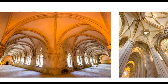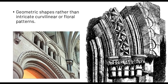Moving on from the vaulting system — the details of Romanesque architecture basically employ geometric shapes rather than intricate curvilinear or floral patterns. As you can see, the images show mostly geometric shapes: triangles, rectangles, zigzags, minimal floral elements, arches, and circles. That is the approach of Romanesque detailing — it is very geometric. It is intricate but not in a floral or leaf-like way; it is more on geometric shapes.